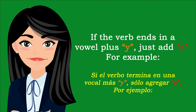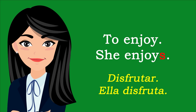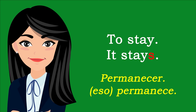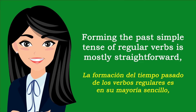If the verb ends in a vowel plus Y, just add S. For example: To play — He plays. To enjoy — She enjoys. To stay — It stays.